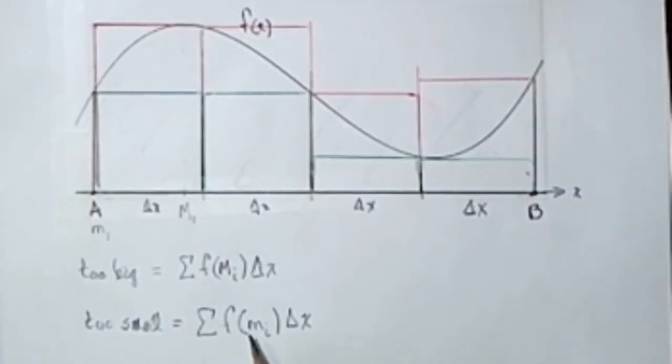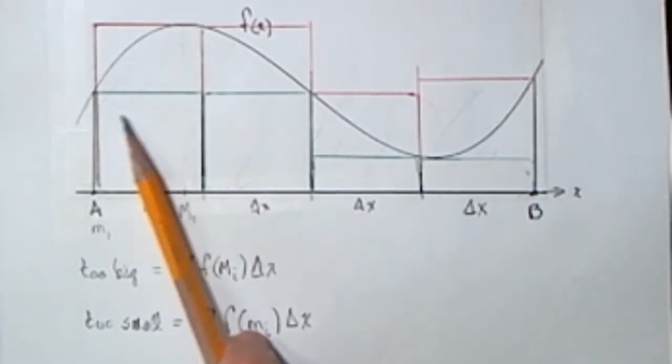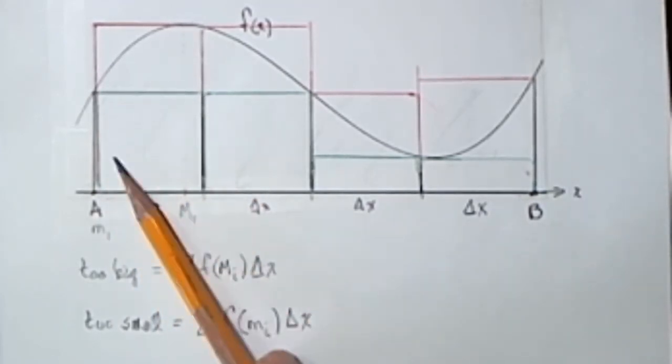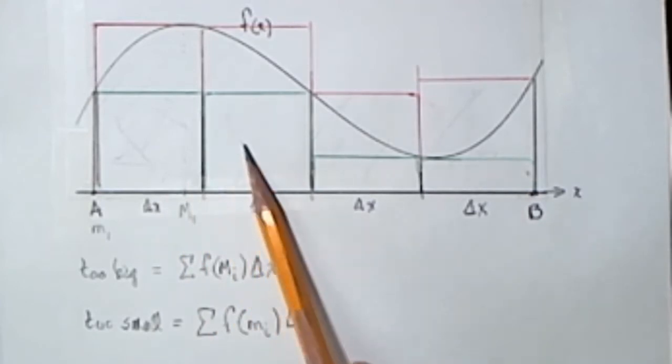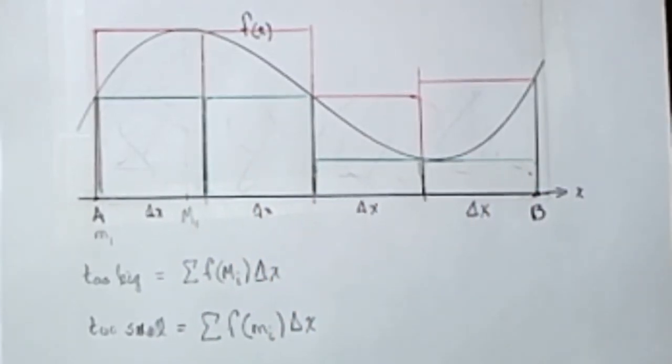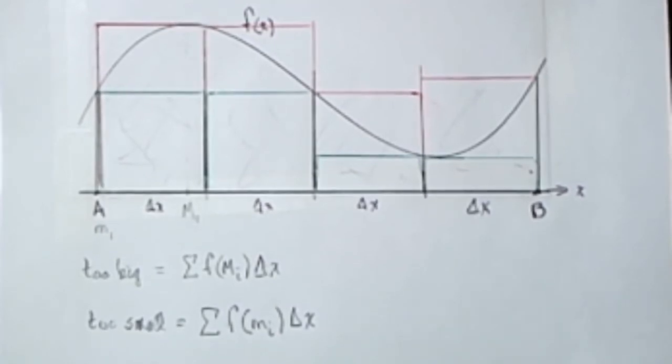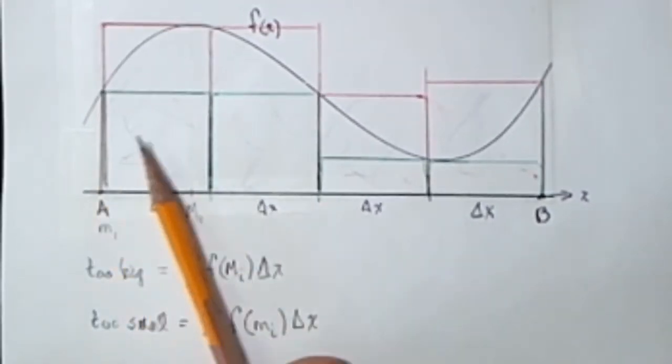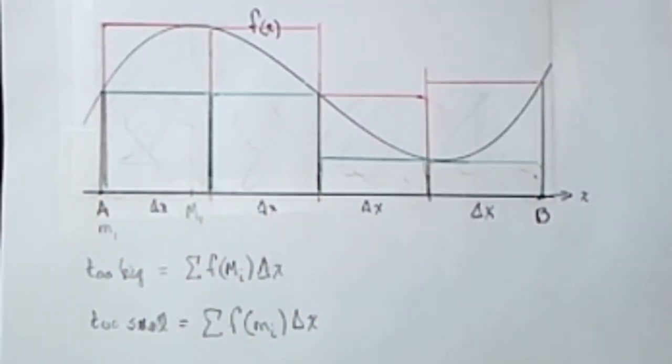We could find an estimate that's guaranteed to be too-small by looking at the x-value, the height of the function, the smallest on the interval. So the sum of these green areas is going to be an area that's too small. The point is, the right answer is trapped between those two somewhere.